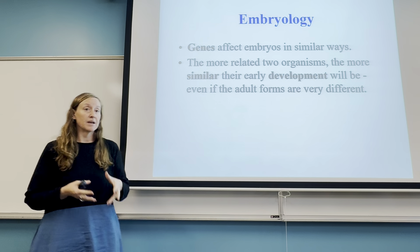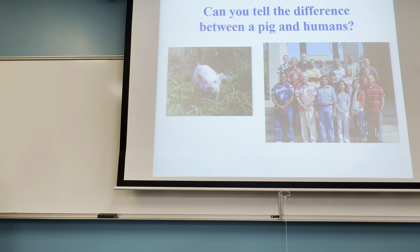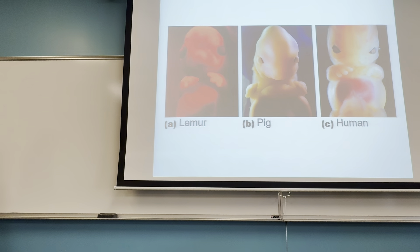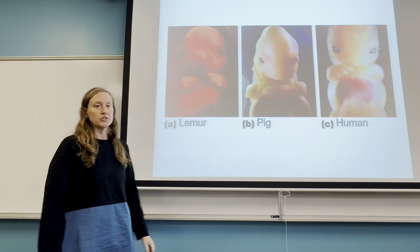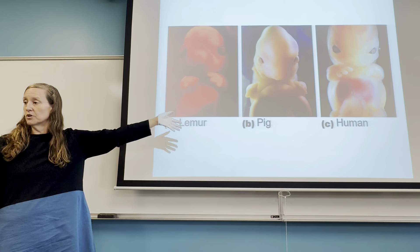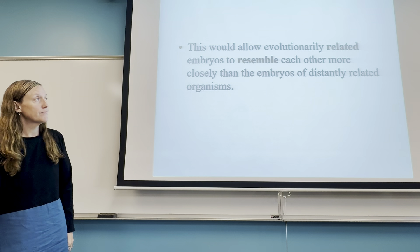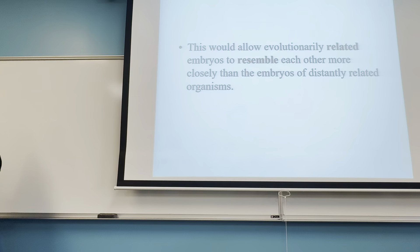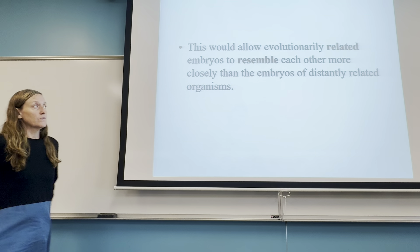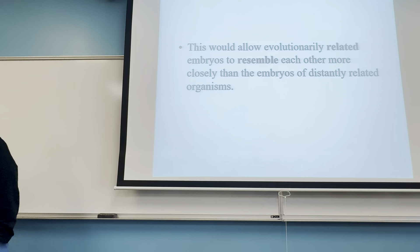The early stages of embryos will look very similar if organisms are closely related. Can you tell which are pigs and which are humans? At these early embryological stages it can be difficult to tell them apart. All vertebrates look very similar at these early stages and then eventually they become very different. As a general rule, organisms that share a close common ancestor will have very similar embryonic stages.